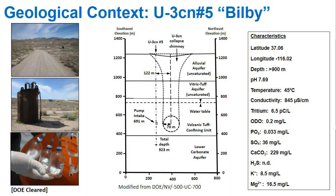Some of these sites are very unique and strange, such as U3C number five, which is a borehole drilled right next to an atomic detonation. It was under the water table with no radiation — actually a very closed-off system. The water was heated around 45 degrees Celsius, pH around 7.6 to 8, very reduced with a lack of oxygen and lack of nutrients. From this environment, I was able to isolate a new genus of microbes.